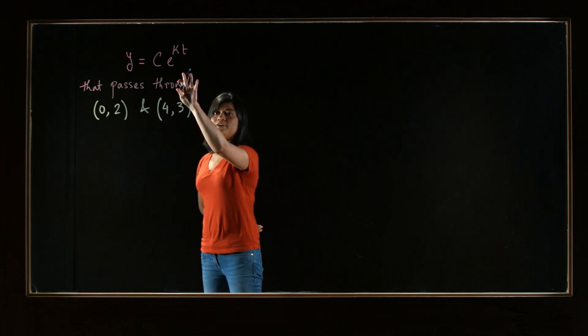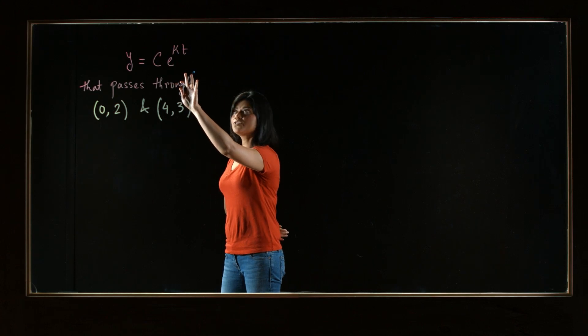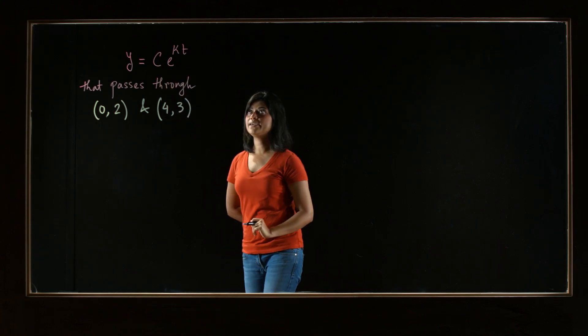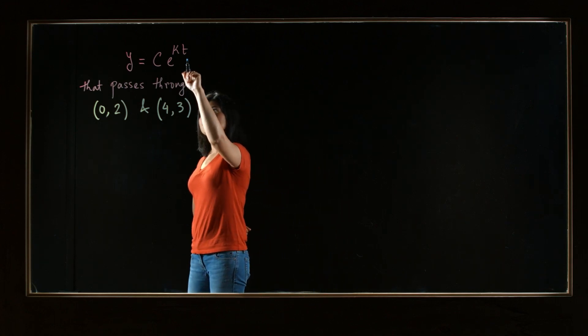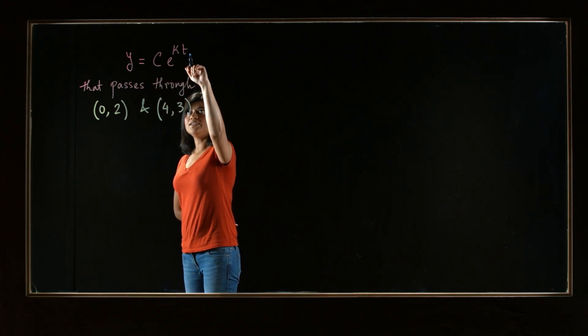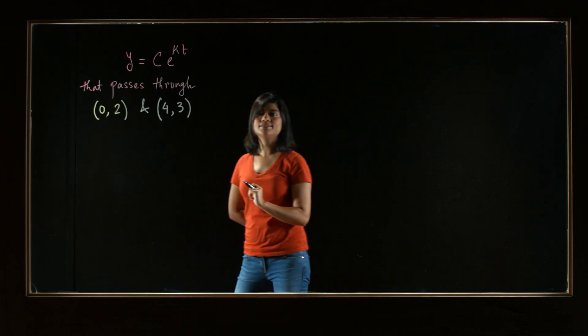Now this exponential function has this particular form. It's of the form c times e to the power kt. So you notice that here our variables are t is the independent variable and y is the dependent variable.